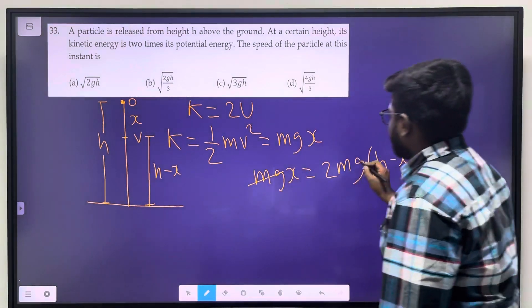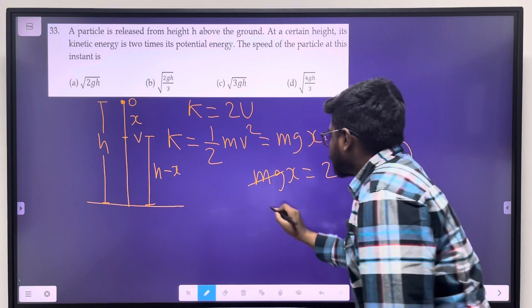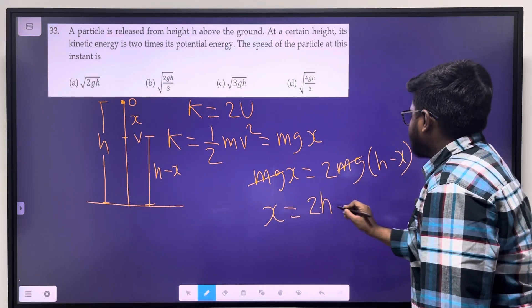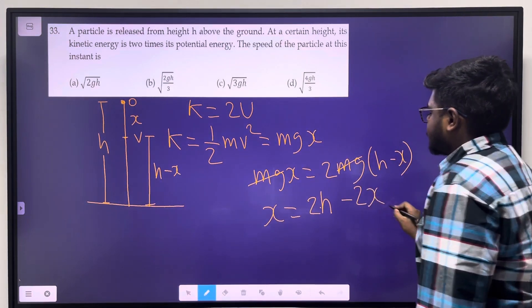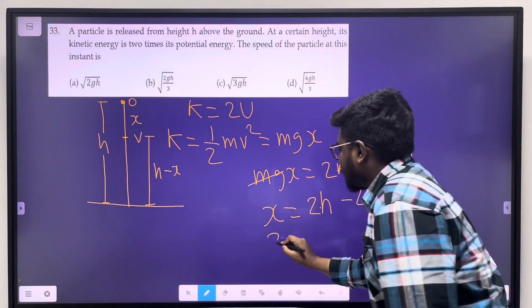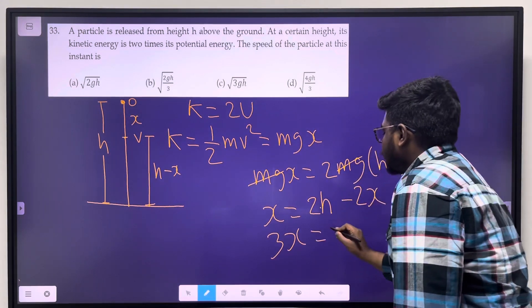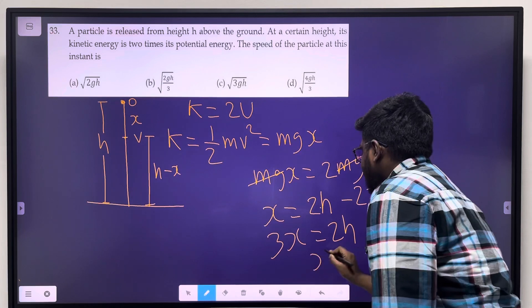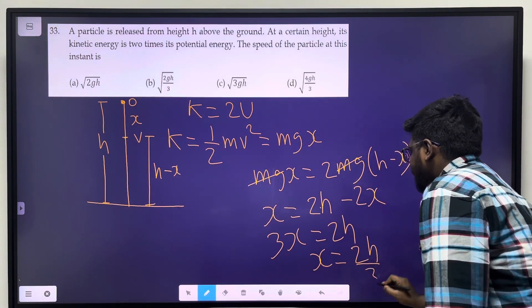The mg cancels. So x equals 2h minus 2x. Rearranging, 3x equals 2h. Therefore x equals 2h divided by 3.